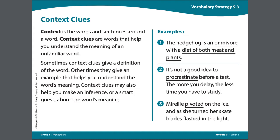Let's look at the first example. Number one: the hedgehog is an omnivore with a diet of both meat and plants. The sentence says that a hedgehog is an omnivore. I'm not sure what the word omnivore means, so I can look for context clues in the sentence to help me understand. Context clues might appear near the word in the same sentence or in another sentence.